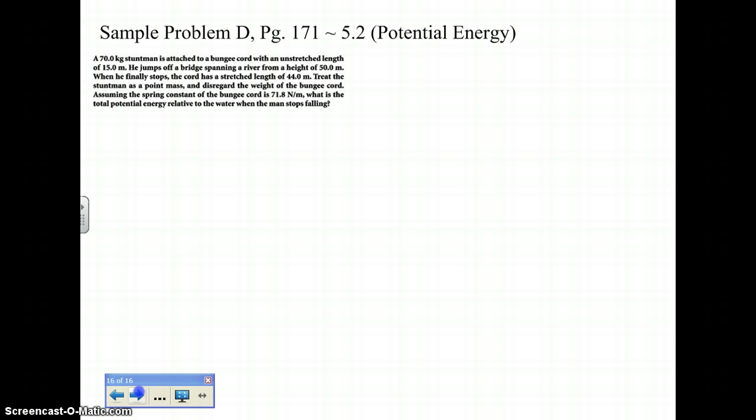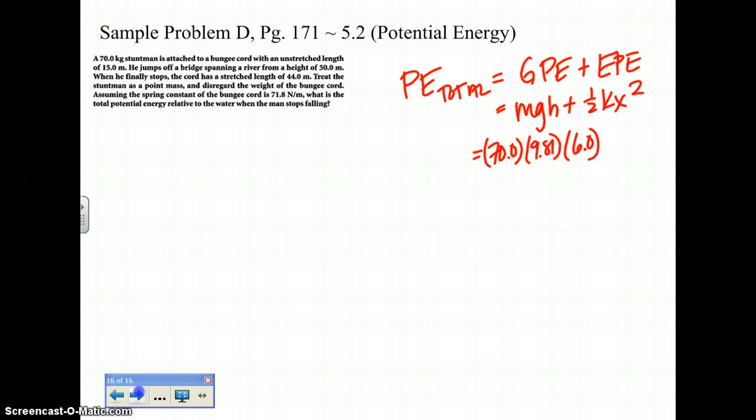So first thing that you want to do is understand that your givens and unknowns, but after that is that your PE total. For your PE total, you want to assess your GPE and your EPE. Whereas your GPE is going to be mgh and your EPE is one half kx squared. So let's just do GPE first. So for our GPE, our mass is 70.0, your g is 9.81, and your height is a grand total of 6.0. I want you guys to look at that problem there and figure out where 6.0 came from. Stop and think, I don't want you to just copy it down. So with that in mind, that's going to give you a final answer of 4120.2, which really gives you 4120 joules. So that's your GPE portion of this.